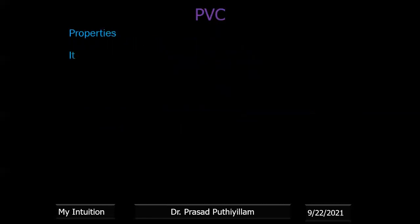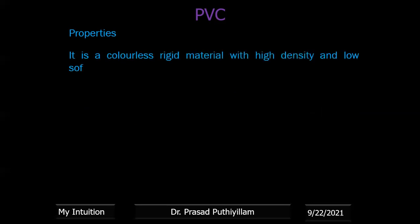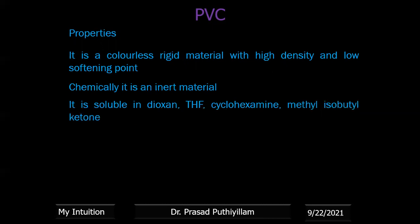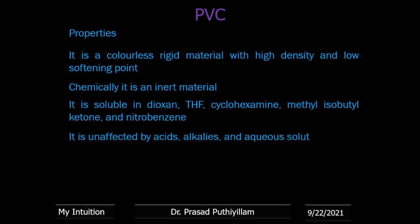PVC properties: it is a colorless, rigid material with high density and low softening point. Different colors are mixed with PVC powder before molding. Chemically it is an inert material. It is soluble in dioxane, tetrahydrofuran, cyclohexanone, methyl isobutyl ketone, and nitrobenzene. It is unaffected by acids, alkalis, and aqueous solutions.